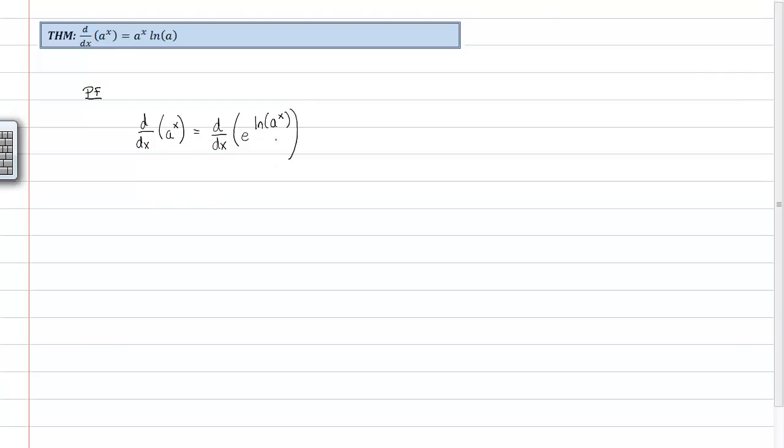Now that may not look like it did very much for us, but it did quite a bit. Because what we could do here is we could take advantage of our property of logarithms. And that is if you take the logarithm of an exponential, it allows you to bring out the exponent. So this will allow us to move that exponent out in front of the logarithm itself. This is going to equal the derivative with respect to x, that's the variable we're taking the derivative with respect to, e raised to the x times the natural log of a.